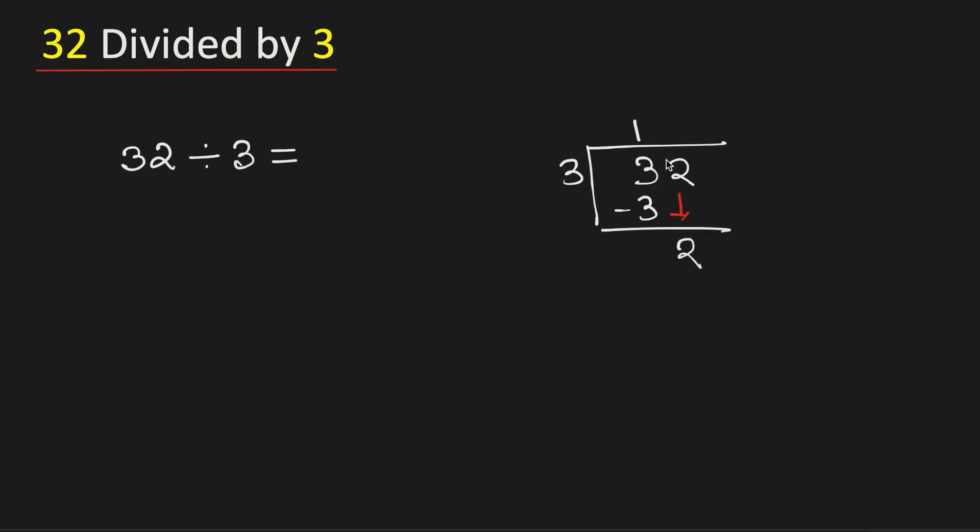In this case, what we have to do is multiply 3 by 0 and write 0 here. 3 times 0 is 0. Subtract, we get 2.